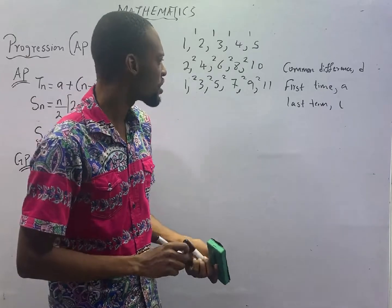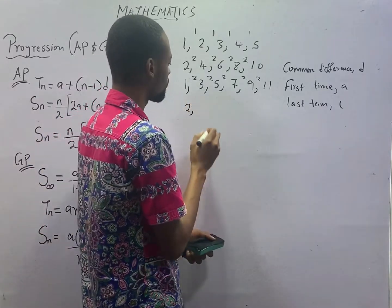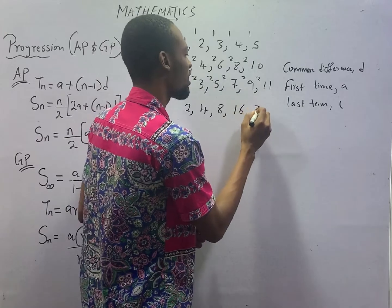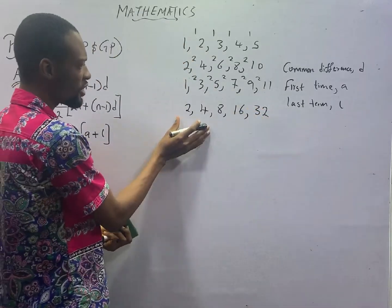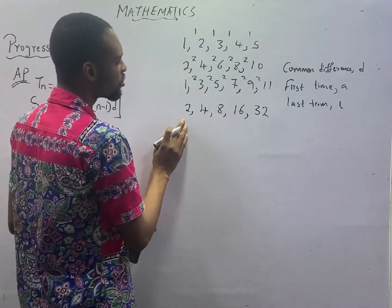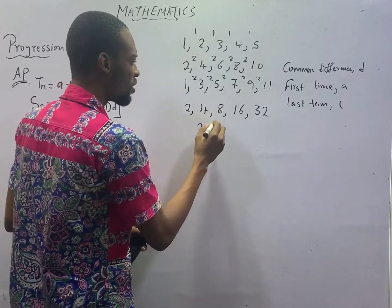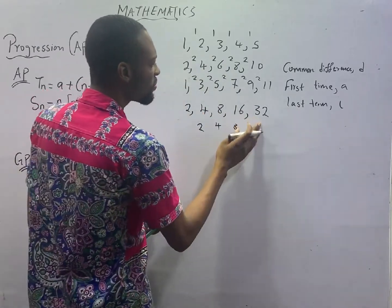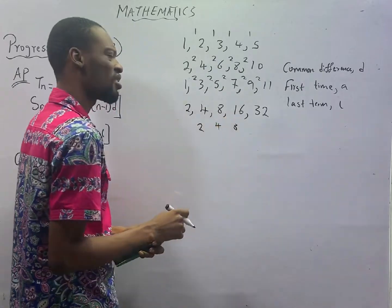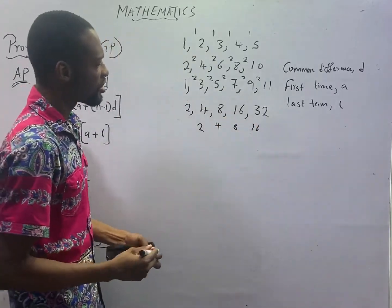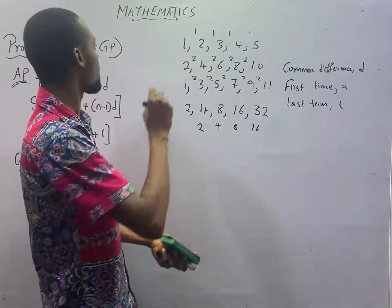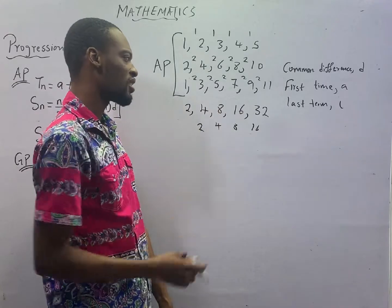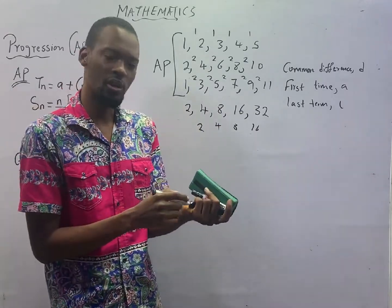If in a progression I choose to go this way: 2, 4, 8, 16, and 32. In this case, 4 minus 2 is 2, 8 minus 4 is 4, 16 minus 8 gives me 8, and 32 minus 16 gives me 16. This is quite different from arithmetic progression. When you subtract, they give you different values — you don't have a common or constant difference.